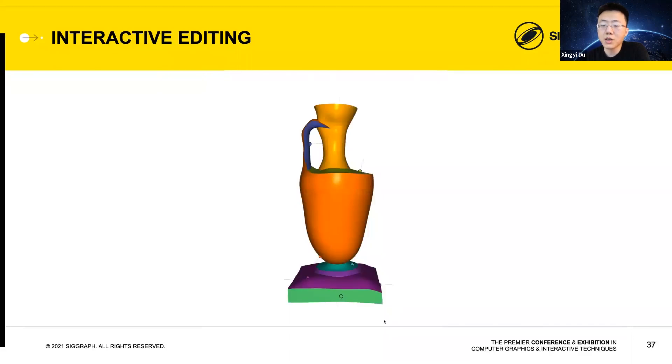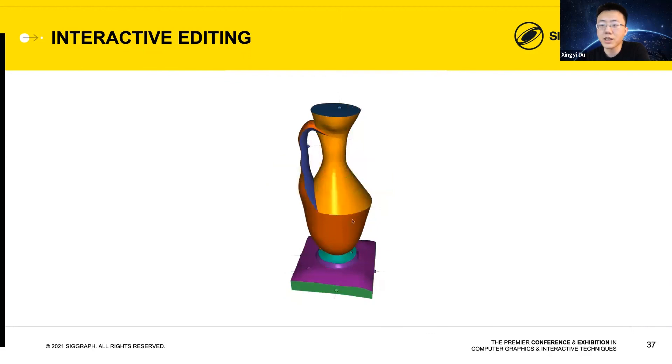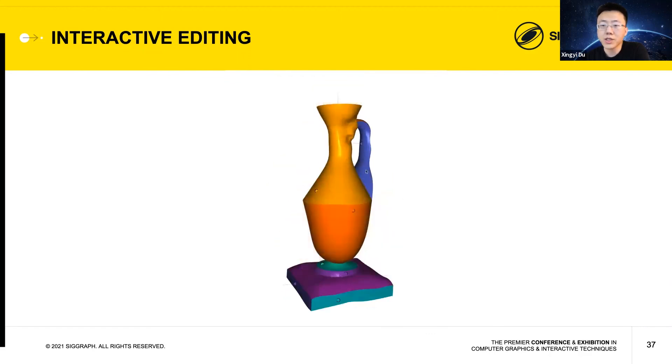We next show a more complex example. The vase is converted from a mesh input. It consists of 14 half-spaces, six of which are represented as free-form implicit surfaces using VIPSS. We first demonstrate the deletion of a half-space, such as this green surface, which makes the neck of the vase longer. And now this blue surface, which removes the handle of the vase. Note the remaining half-spaces still form a solid shape. Now we select a free-form surface and change its shape by moving its control points. The body of the vase now has a different geometry, while the solidity of the shape is still maintained.